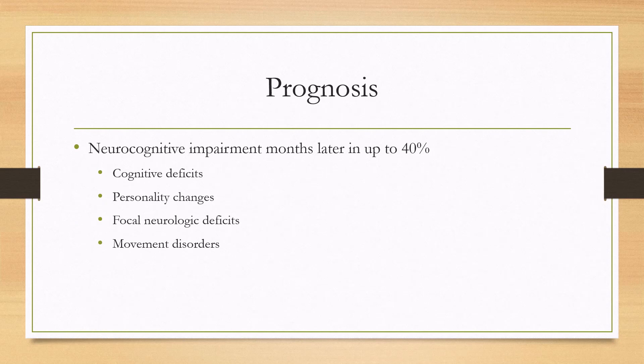For prognosis, neurocognitive impairment can occur days or months later in up to 40% of patients. This can include cognitive deficits, personality changes, focal neurologic deficits, and movement disorders.